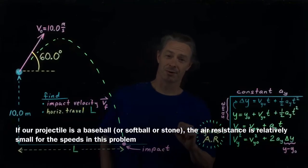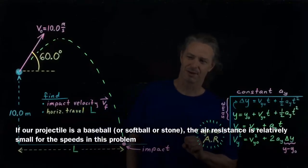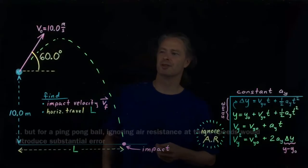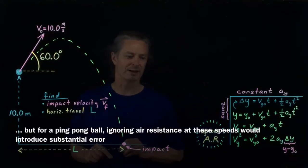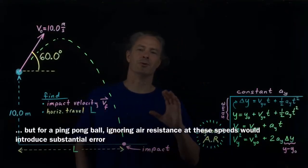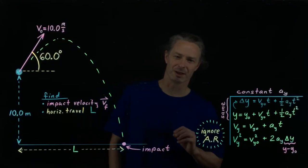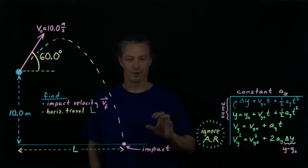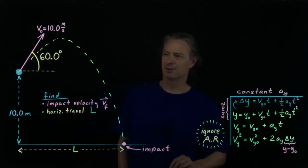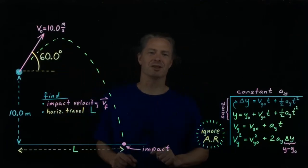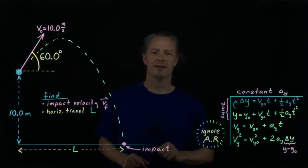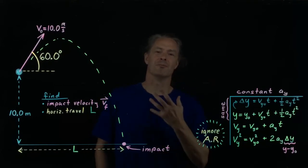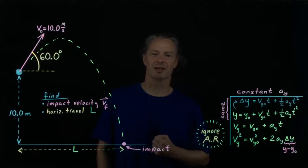Air resistance, as I noted in a previous video, makes a highly variable, complicated contribution to the acceleration of a real projectile. So, in order to turn this problem into something we can actually solve, we're going to ignore air resistance. If we ignore air resistance, then the only acceleration we have is the acceleration due to gravity — straight downward near the surface of the Earth with a magnitude of 9.8 meters per second per second.